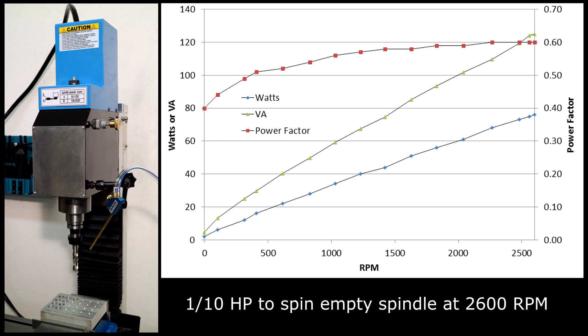This graph might be useful for describing the power necessary to simply turn the spindle. In that case, at 2600 RPM, approximately one-tenth of a horsepower is necessary simply to turn the spindle. Over most of this graph, the power factor is between 0.5 and 0.6. However, under significant load, the power factor will increase to 0.7 or 0.8.